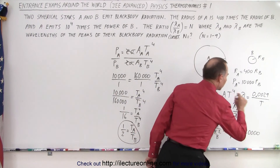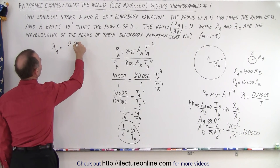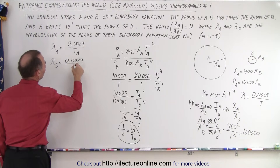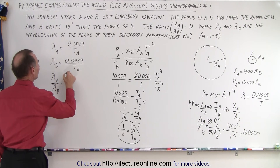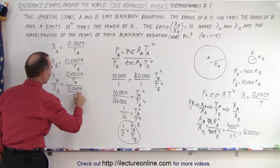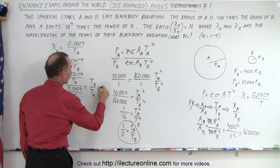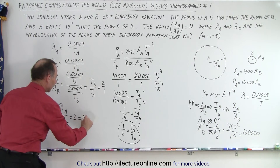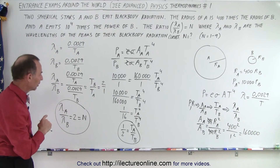Now using Wien's Law: lambda_A = 0.0029 / T_A and lambda_B = 0.0029 / T_B. The ratio lambda_A / lambda_B equals (0.0029/T_A) / (0.0029/T_B), which simplifies to T_B / T_A — the inverse of the temperature ratio — which is 2 to 1. So lambda_A divided by lambda_B equals 2, which is equal to N.